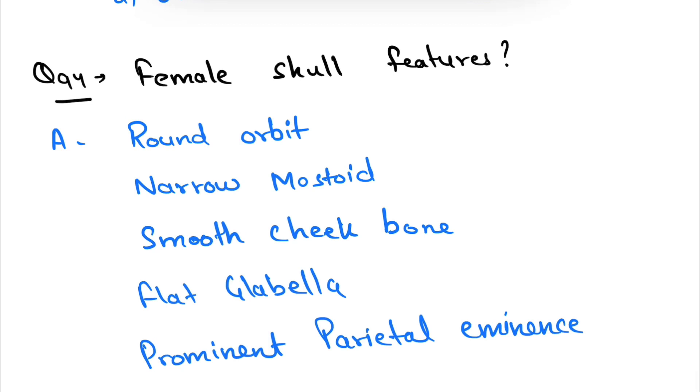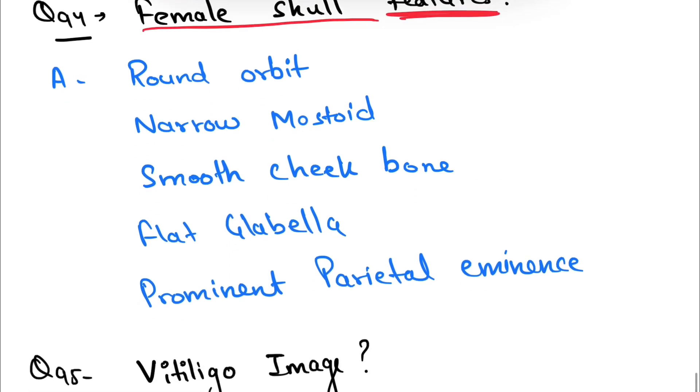Question number 94: female skull features were asked. Female skull features are: female skull has round orbit, narrow mastoid,